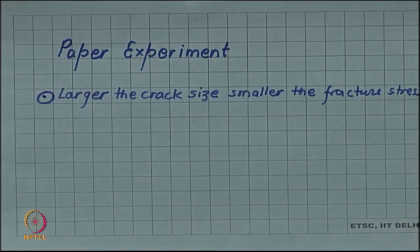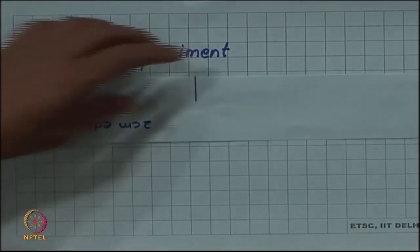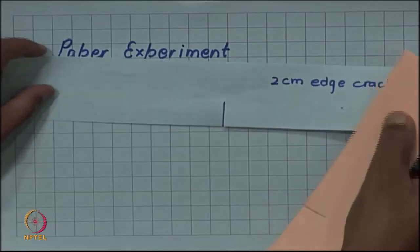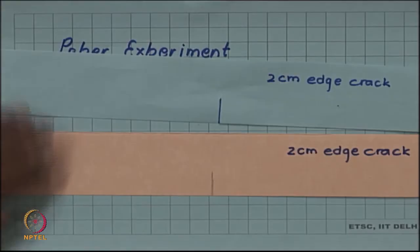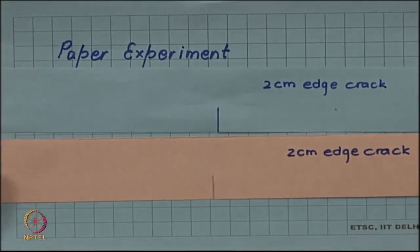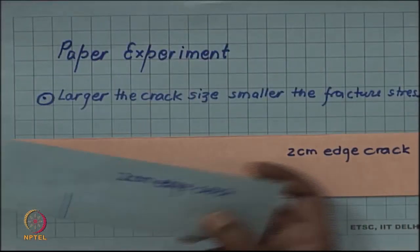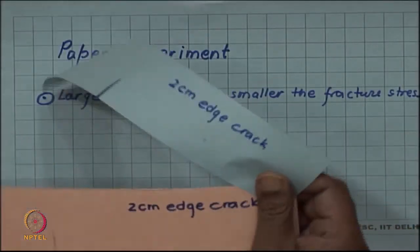Now I have one more set of experiments in which I am changing the material. I have two strips again of the same external dimensions and the same crack size — both have a 2 centimeter crack — but one of them is of a floppier material than the other. You can see I am holding them in my hand. This one is very floppy because it is a thin sheet, and this one is a stiff paper. The stiffness of this is much much more than the other one.